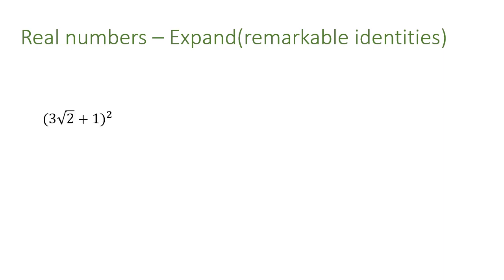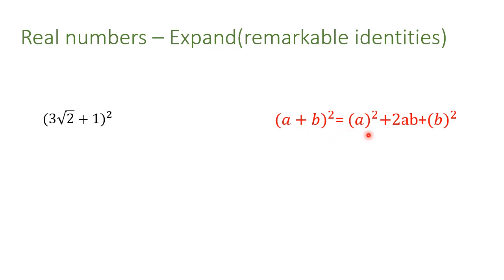Now for another remarkable identity: (3 radical 2 + 1)² is in the form of (a + b)², which equals a² + 2ab + b². The difference is the plus sign in the middle — because we have a plus in the expression, we write plus in the answer. I encourage you to pause the video and try to solve it alone.